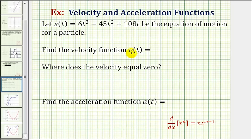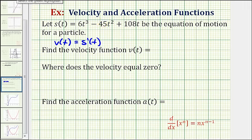The velocity function measures the change in position with respect to time, so the velocity function v of t is equal to the derivative of the position function. Since the position function is a polynomial function, we can find the derivative using the power rule of differentiation, given here in red.